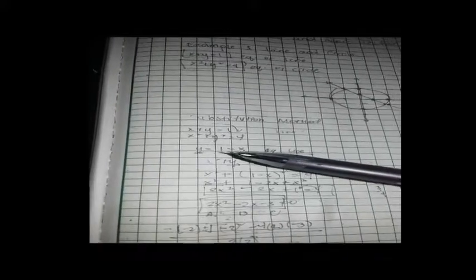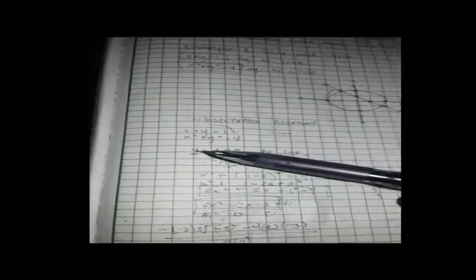Next step is substituting the value of y to the y of the equation of the circle. So, here it is x squared plus 1 minus x squared equals 4. Then, let's do the FOIL method. x squared plus 1 minus 2x plus x squared equals 4.